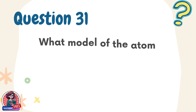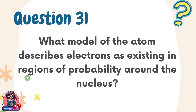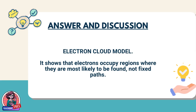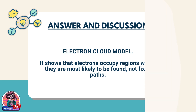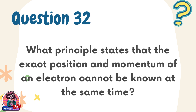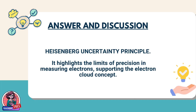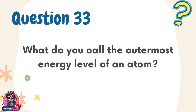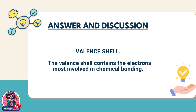Question 31. What model of the atom describes electrons as existing in regions of probability around the nucleus? Answer: Electron cloud model. It shows that electrons occupy regions where they are most likely to be found, not fixed paths. Question 32. What principle states that the exact position and momentum of an electron cannot be known at the same time? Answer: Heisenberg uncertainty principle. It highlights the limits of precision in measuring electrons, supporting the electron cloud concept. Question 33. What do you call the outermost energy level of an atom? Answer: Valence shell. The valence shell contains the electrons most involved in chemical bonding.